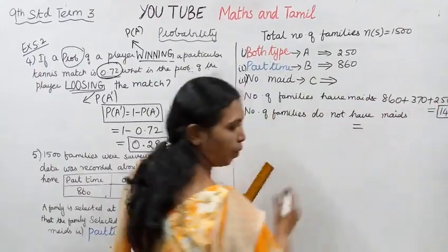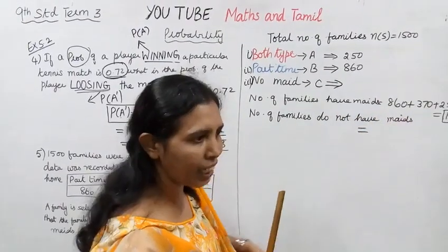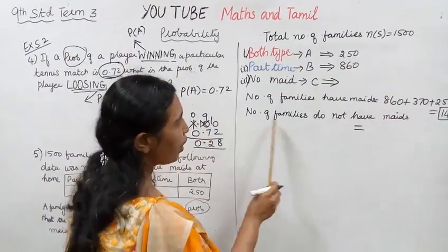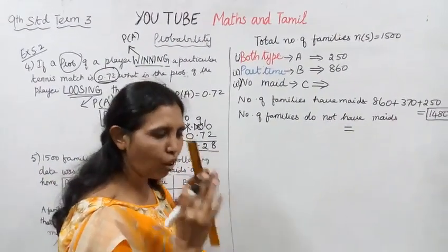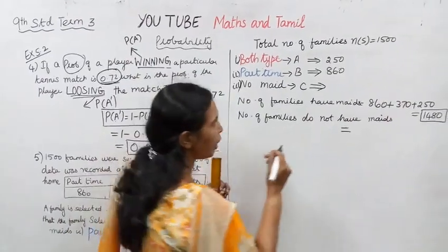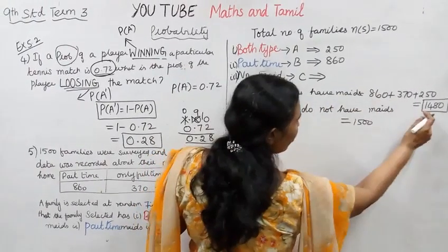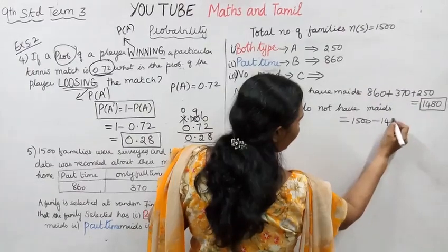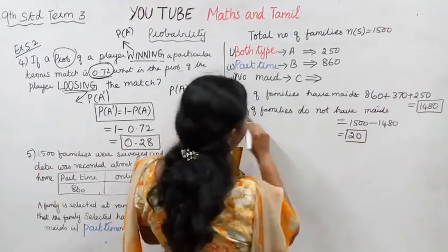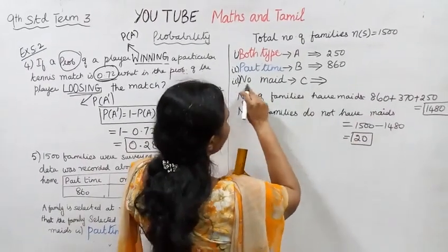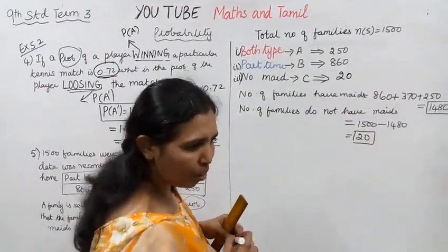Number of families that have maids is 1480. Number of families that do not have maids: 1500 minus 1480 equals 20. So 20 families do not have maids. No maids count is 20.